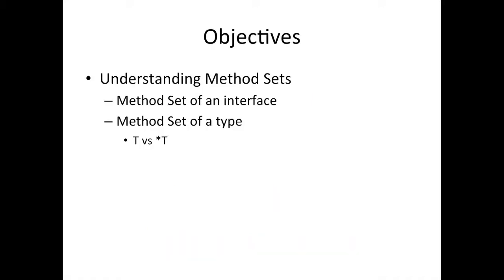We're going to try and understand what the method set of an interface is, and that's very easy — it's clearly stated in the specification. We'll reread that and see it makes sense. Then we're going to look at the method set of a type T versus the method set of type star T. You may not think there should be a difference, but a variable of type T is very different from a pointer to that type — two different things.